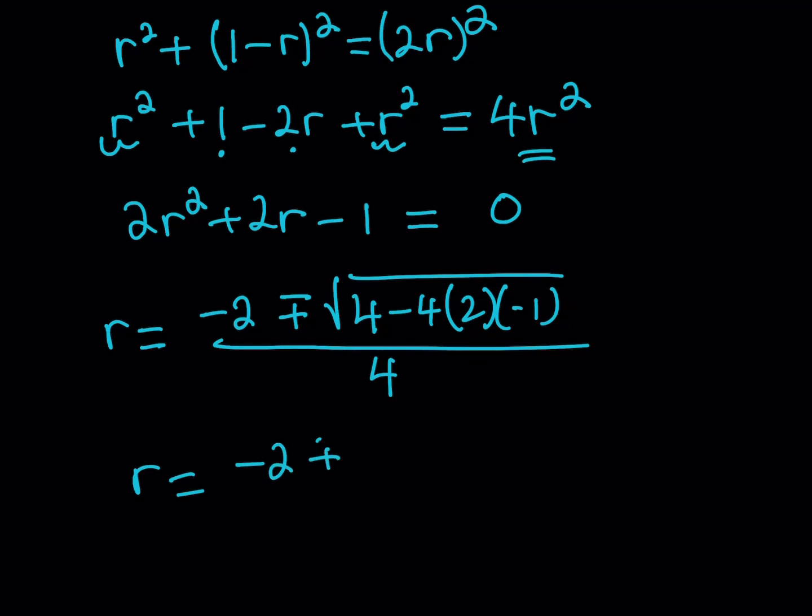So r is going to equal negative 2 plus minus the square root of 12 plus 4, and this is going to split into two solutions: one is negative 2 plus, and square root of 12 can be written as 2 root 3 and then divide by 4, you can call these r₁ and r₂ if you want.